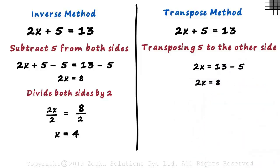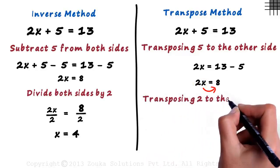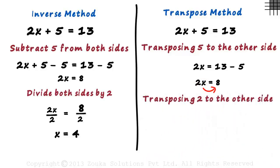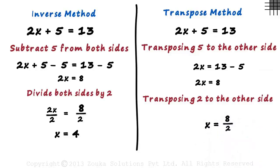The next step is to eliminate 2 from the left hand side. Since 2 is multiplied with x, we transpose it to the right hand side and divide 8 by 2. So we get x equals 8 divided by 2, which gives us the value of x as 4.